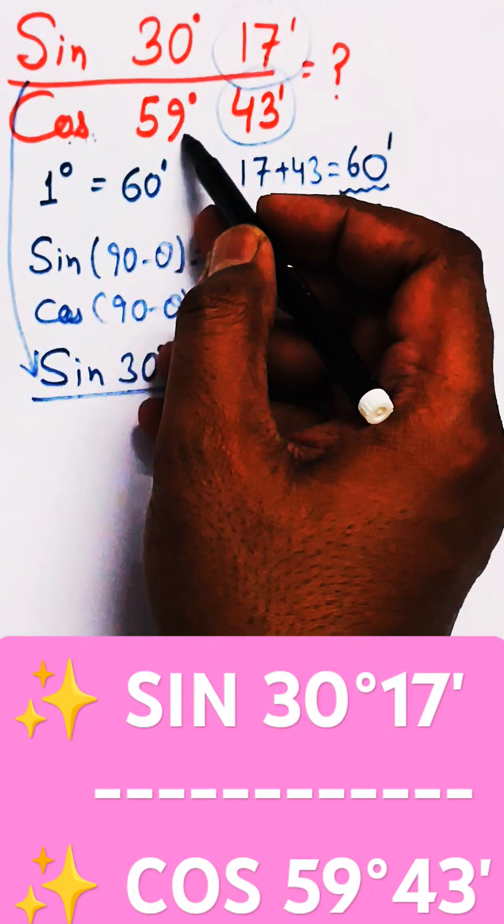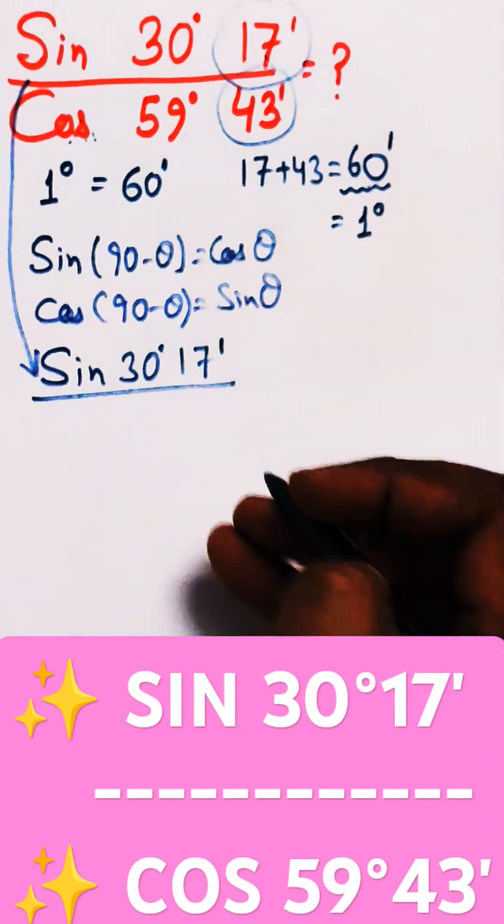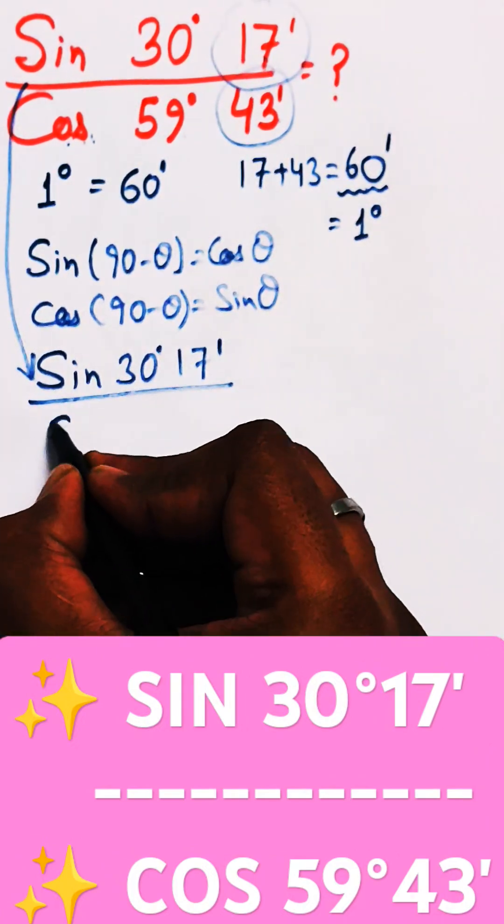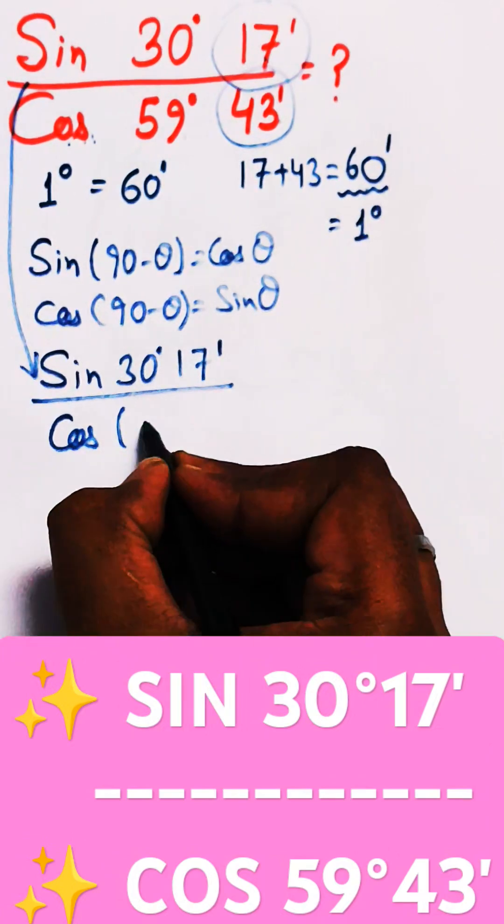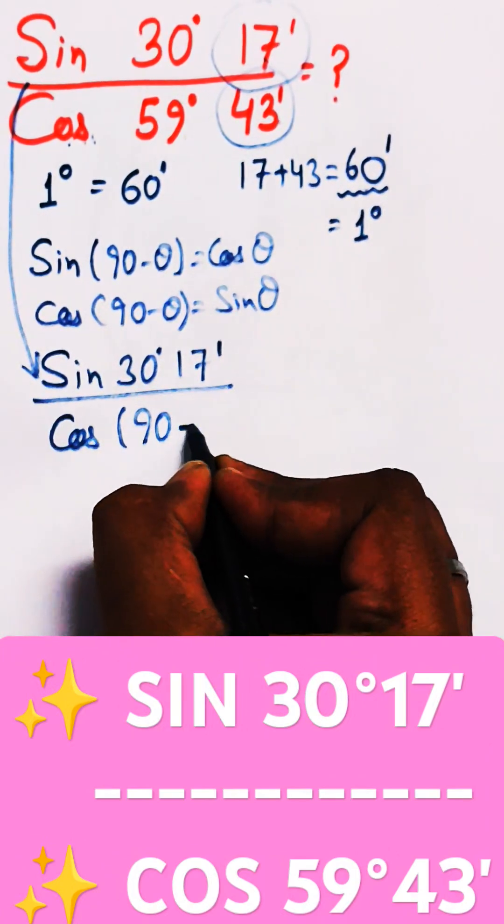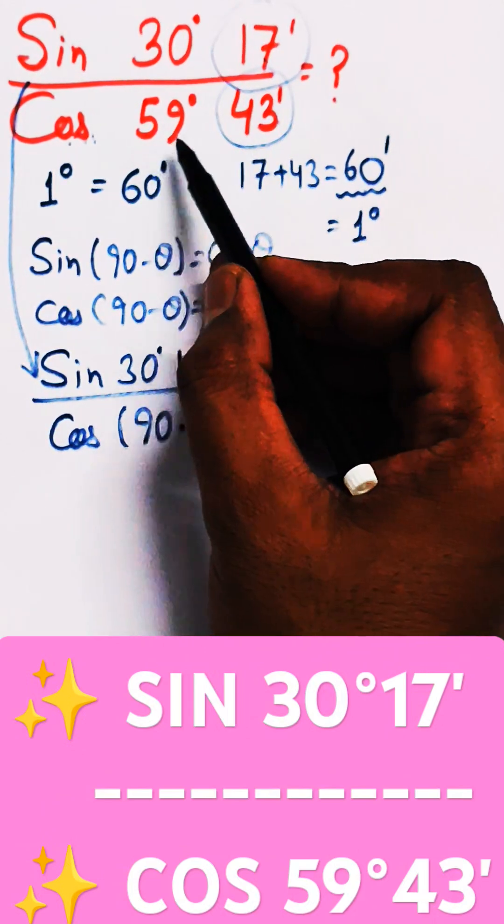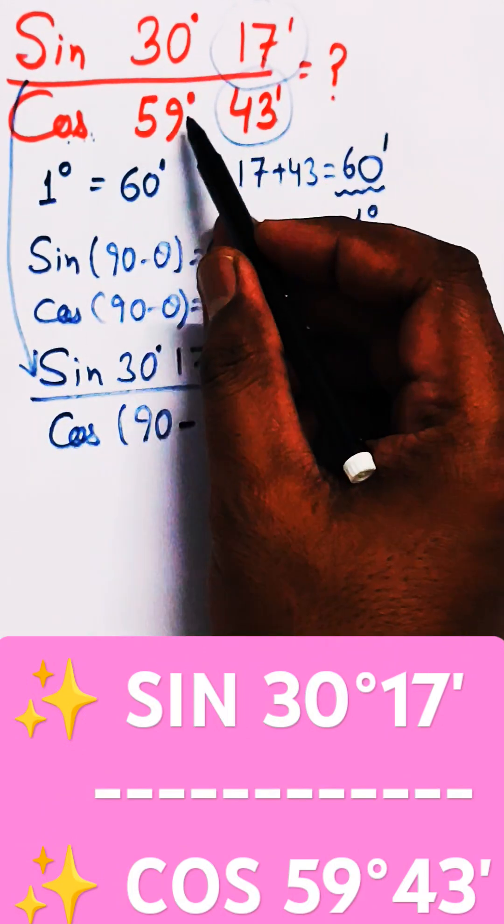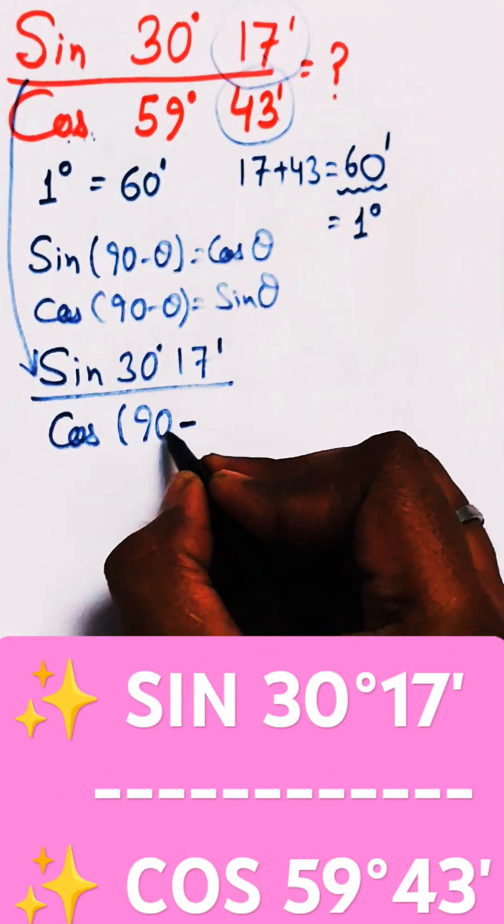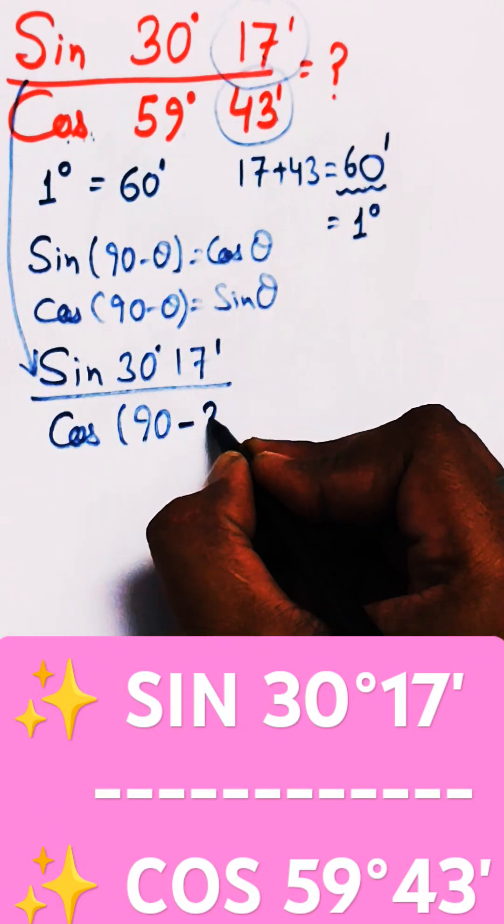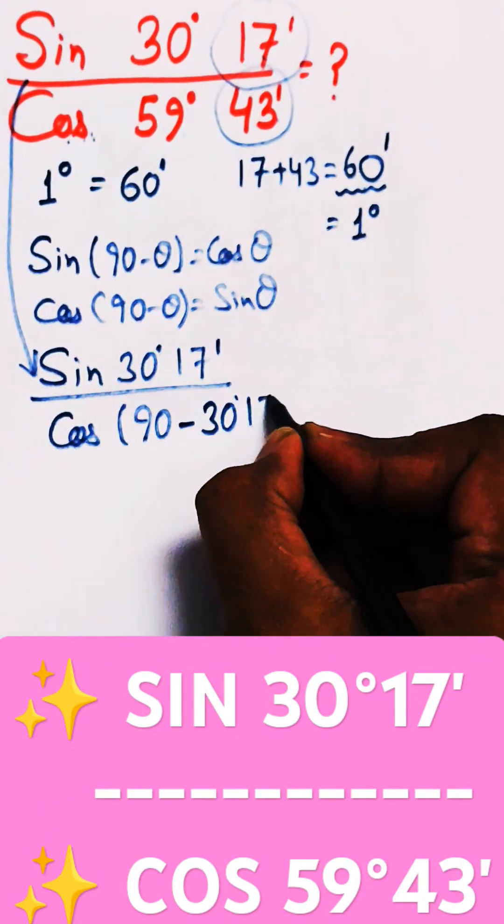In the denominator, cos 59°43' can be written as cos(90° - 59°43'). So 59°43' can be written as 90° - 30°17'.